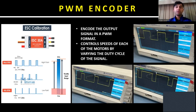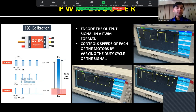PWM encoder: the main objective of this module is to encode the output signal in PWM format. It helps us control the speeds of each motor by varying the duty cycle of the signal. In an electronic speed controller, it works at 50 Hz and the input signal must have on-times of one to two milliseconds.